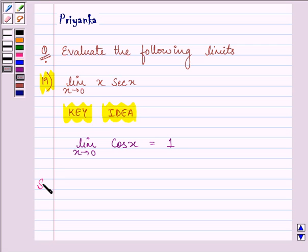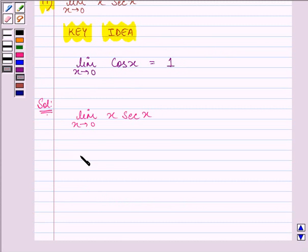Proceeding on with the solution, we are given limit x approaches 0, x into secant x. Now we know that secant x can be written as x into 1 upon cos x.